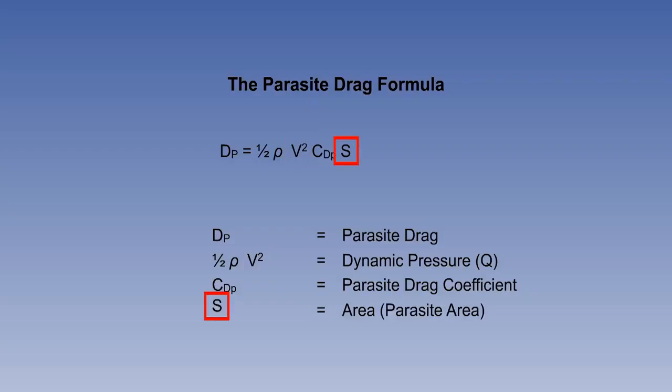Changes in configuration will also have an effect on parasite drag, which varies in direct proportion to the frontal area presented to the airflow. This cross-sectional area is known as parasite area. If flaps and landing gear are lowered, speed brakes extended, or roll control spoilers operated, parasite area and thus parasite drag will increase.